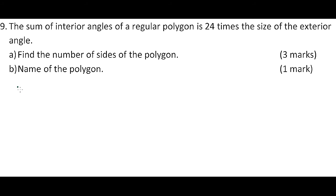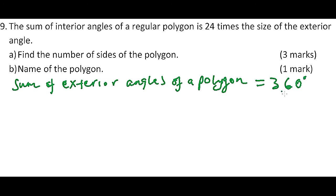The sum of exterior angles of a polygon is equals to 360 degrees.